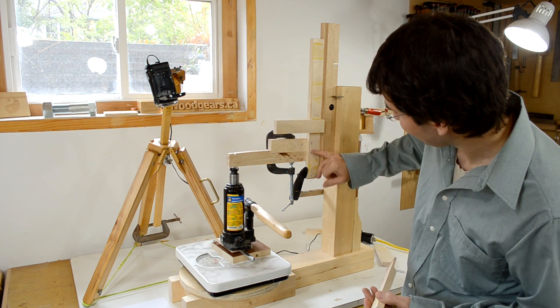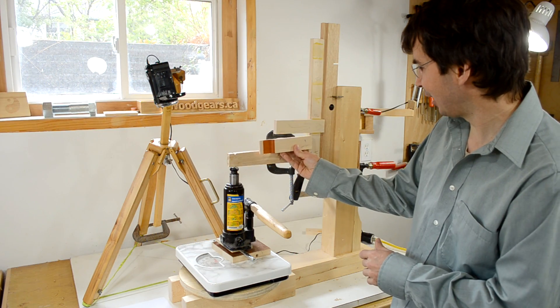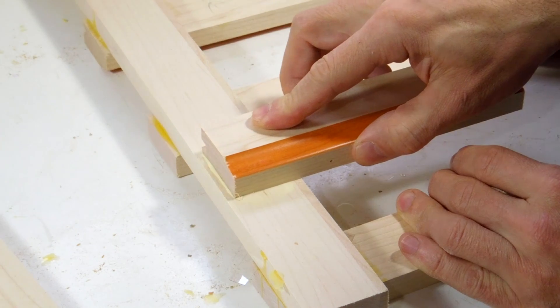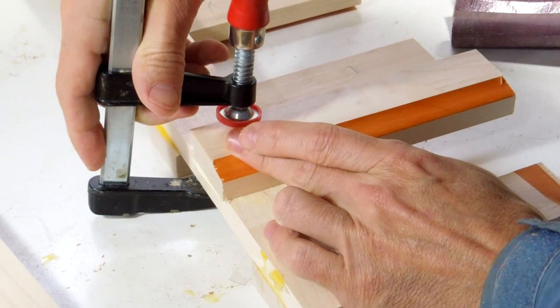So in this one I put only glue on this part and then I slid the other part on top like that. To simulate like sliding a dry tenon into a hole with glue in it. So let's see how that one will do.